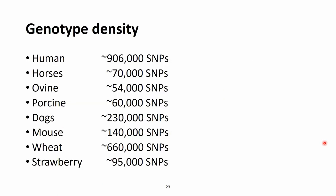SNP chips exist for a wide variety of species. There is a human SNP chip with around 900,000 SNPs, chips for horses, porcine, companion animals such as dogs and cats, birds, mice for research experiments, and plants such as wheat. I also included strawberry because — I just found it funny — there is already a SNP chip existing for strawberry, which I was not expecting to find, so it is the cherry on top of the list.